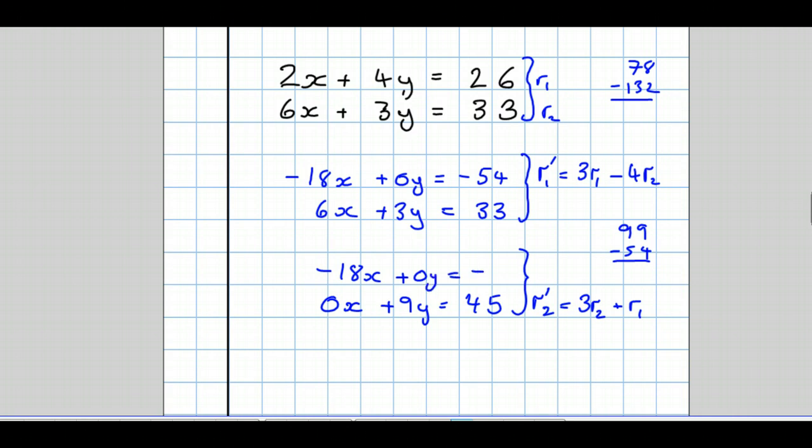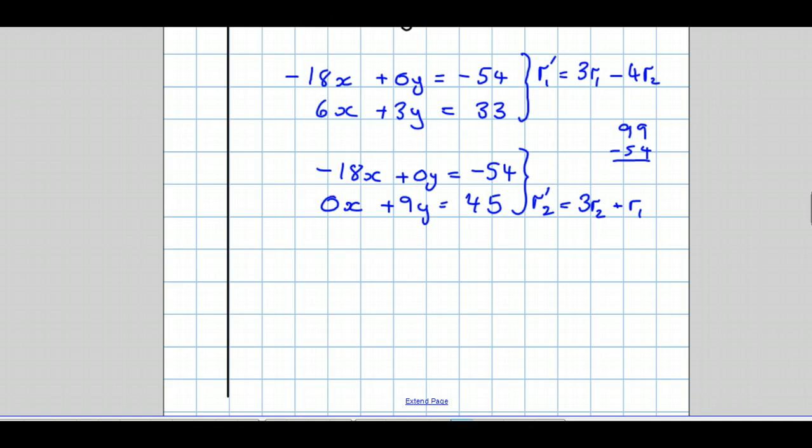And then if you notice, my row 1 hadn't changed. So there we have it, we're almost there. We've got rid of the y's in the first row and rid of the x's in the second. And then we'd finish off by showing our new rows 1 and 2s in just in terms of a single value, just in terms of 1x and 1y. So my new row 1 would be old row 1 divided by minus 18, so minus 54 divided by minus 18 is plus 3. And then my new row 2 would be my old row 2 divided by the coefficient of y, which is 9, to give 0 lots of x plus y equals 5.